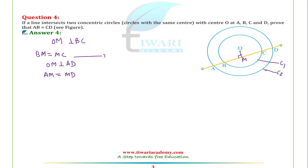These are equations 1 and 2. We use the theorem that a perpendicular from the center of a circle to a chord bisects that chord. This is the reason we have written these equations.